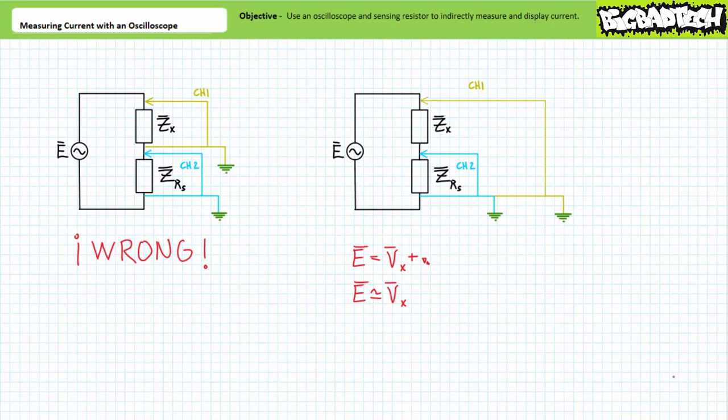Operating under this assumption, the voltage across the element of interest is being measured by channel one. Channel two is measuring that tiny, neglected voltage drop across the tiny sensing resistor. Mathematically we are ignoring it; however, it's still there, and the oscilloscope screen can be appropriately scaled such that this voltage waveform can be displayed and measured. Given current is voltage over impedance, an appropriate scaling factor can be applied to the voltage on channel two to arrive at the resultant current. Additionally, one can simultaneously display both channels to show the relative phase shift of the voltage across the element of interest and the current through it.